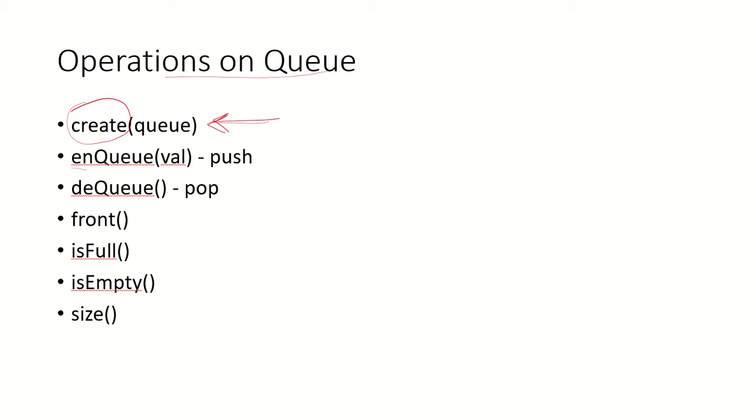The next operation is enqueue. Enqueue is similar to the push operation - it is inserting an element into a queue. If there are already elements present in the queue and this is the front, any element that comes in will always come from the rear end. If this is the new element that has come in, now the new element will be the rear of the queue.